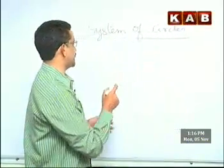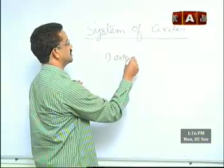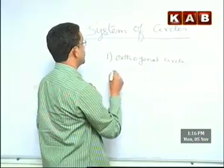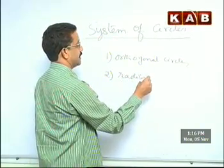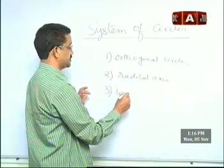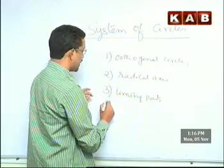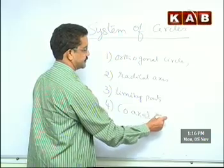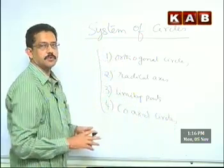The important key concepts are: first, Orthogonal Circles; second, Radical Axis; third, Limiting Points; and fourth, Co-Axial Circles. Let me explain these four concepts first, and then we'll work through the problems.